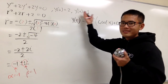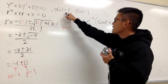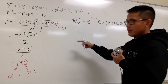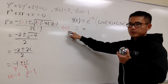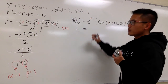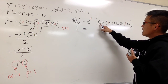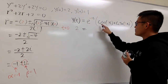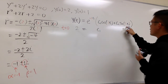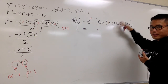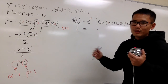We have to solve for c1 and c2 by using the initial conditions. The first condition tells us that when t equals 0, y equals 2. When t equals 0, e to the 0 is 1, cosine of 0 is 1, so we get c1. And sine of 0 is 0, so c2 drops out. Therefore c1 equals 2.